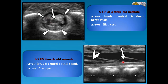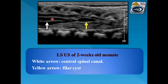This is an example of a filar cyst on LS ultrasound examination and TS. This is the cyst just below the conus medullaris — to differentiate it from the ventriculus terminalis, note that it is outside the conus medullaris. This is the central spinal canal shown on TS.